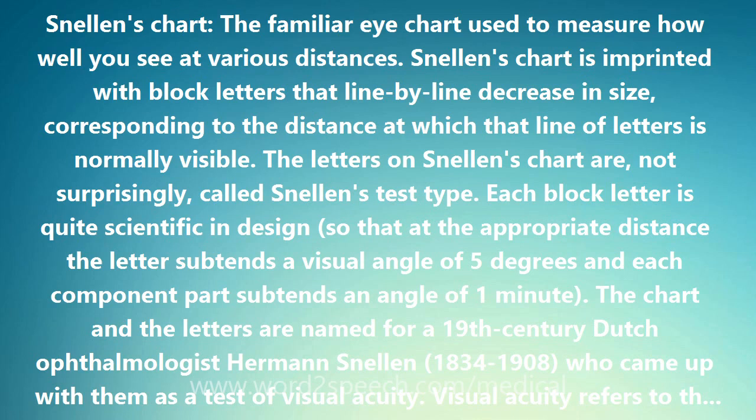The letters on Snellen's chart are, not surprisingly, called Snellen's test type. Each block letter is quite scientific in design, so that at the appropriate distance the letter subtends a visual angle of 5 degrees and each component part subtends an angle of 1 minute.